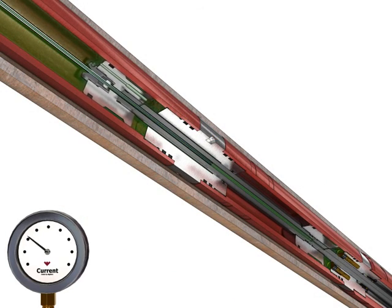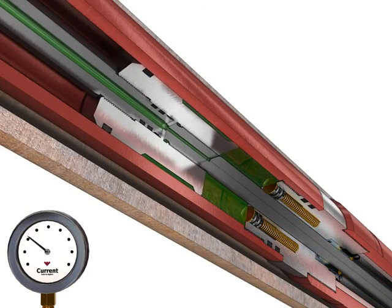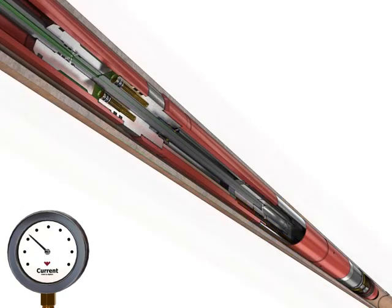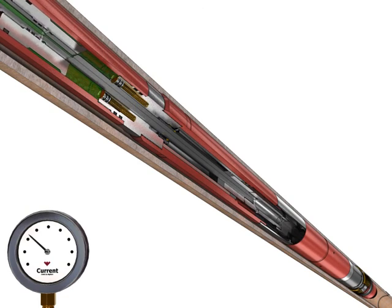As soon as the DPST actuates, it begins the setting of its attached component. From surface, clear indication of the attached component being set can be seen in the current voltage plot.